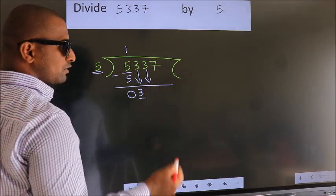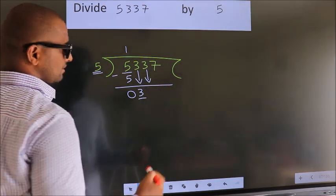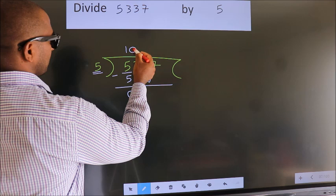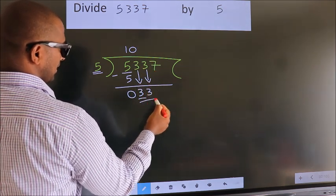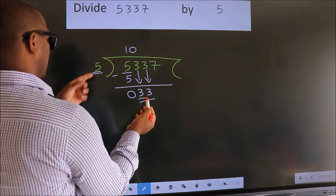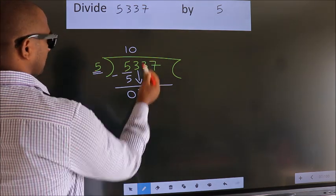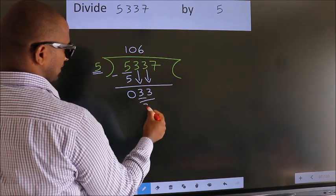And the rule to bring down second number is put 0 here. Then only we can bring down this number. So, 33. A number close to 33 in 5 table is 5, 6, 30.